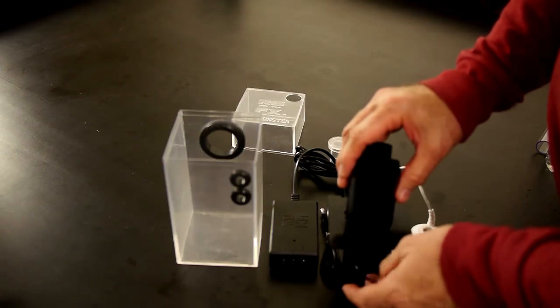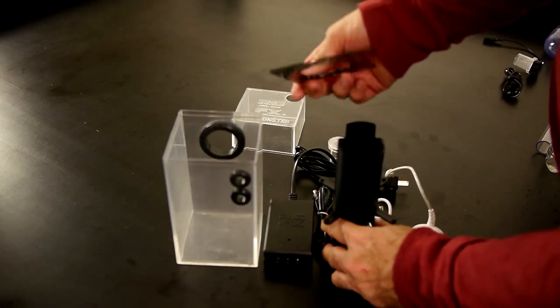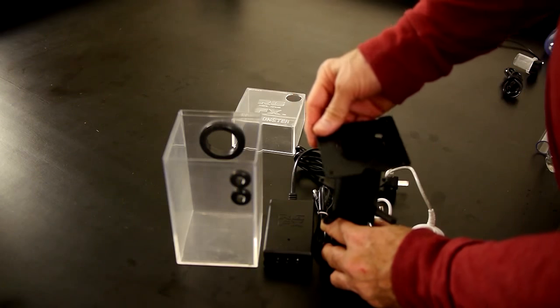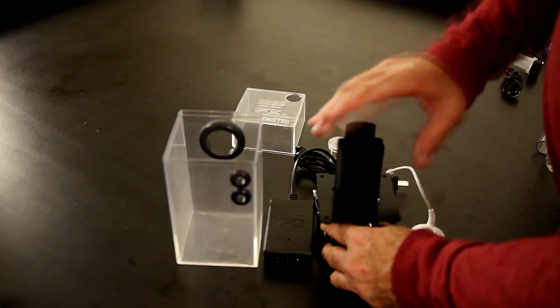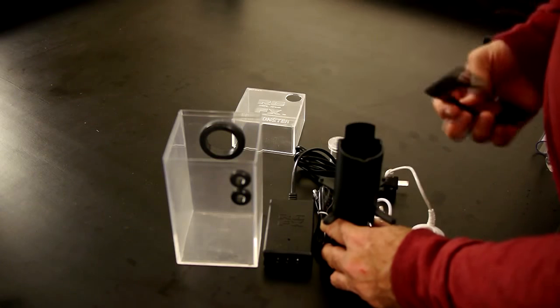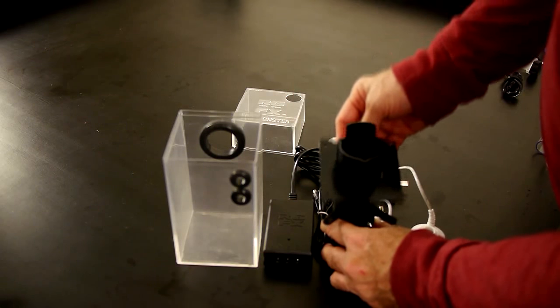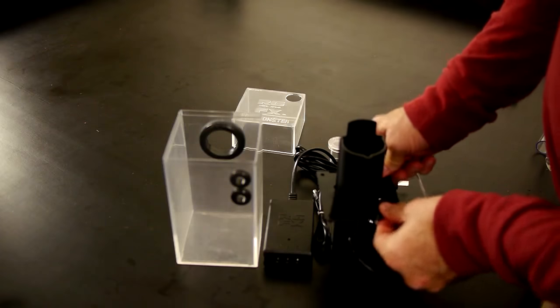This plate also comes off, and it plays a crucial role because what it does is it stops the fog as it's rolling over the top and forces it to come out this hole here. If you don't have the plate on, all the fog will just fall back down into the bottom of the reservoir, so make sure that you have that on.